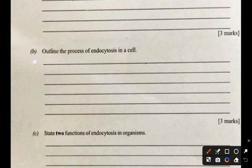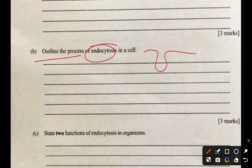Outline the process of endocytosis in a cell. Endocytosis is the process by which cells engulf external substances by folding the plasma membrane inward to form a vesicle. There are two main types of endocytosis: phagocytosis, for engulfing solid substances, and pinocytosis, for engulfing liquids. The vesicle is then transported into the cell for further processing.